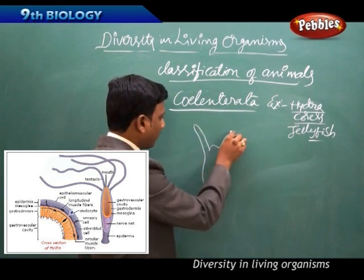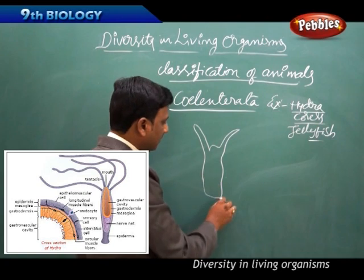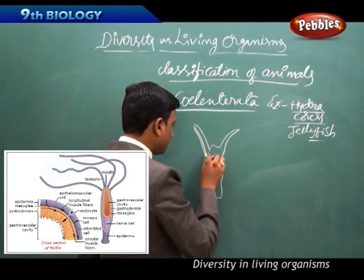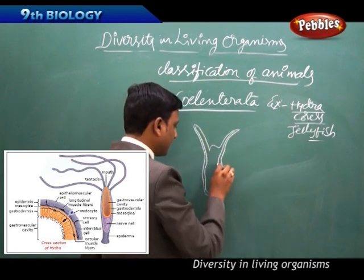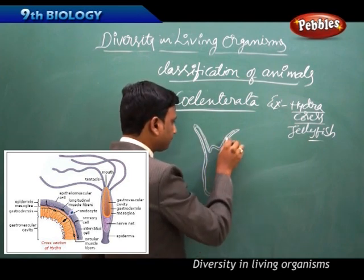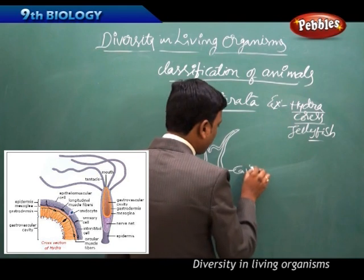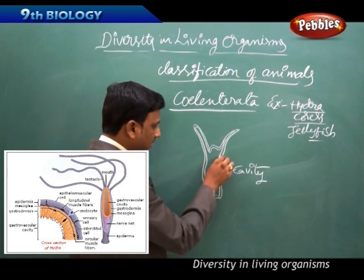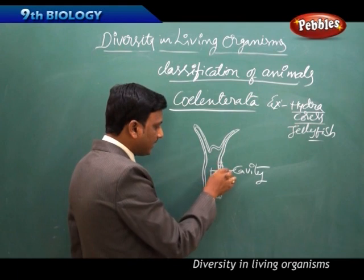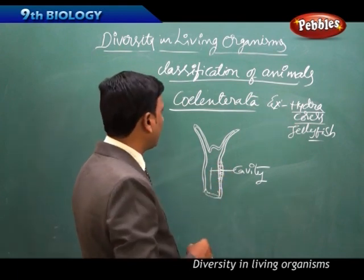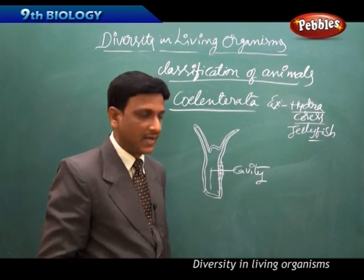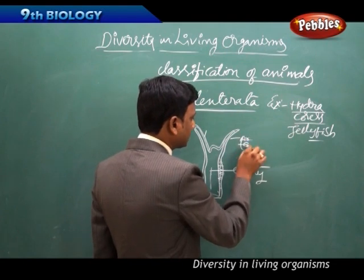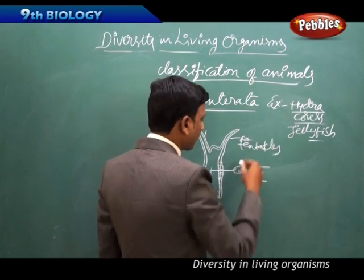In Coelenterata, the body is cylinder-like and made up of two layers of cells. There is a cavity inside the body — an outer layer and an inner layer forming the body wall.